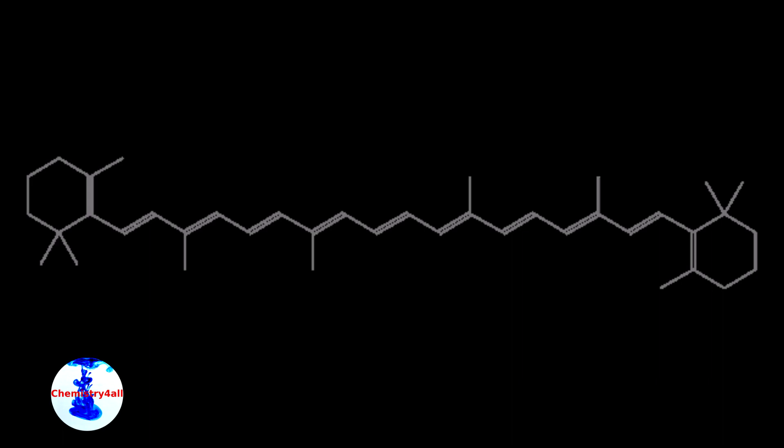Alright, first of all let's have a look at the chemical structure. As we can see, actually trans-beta-carotene is a relatively simple molecule, which in principle could be defined as a highly conjugated system, composed by a total of 22 pi electrons.